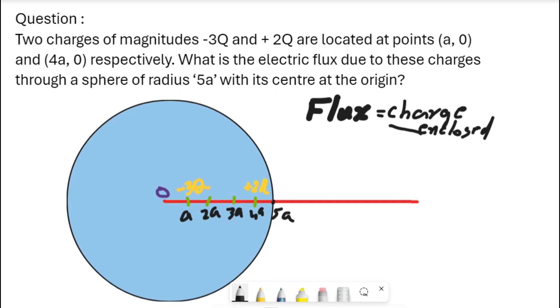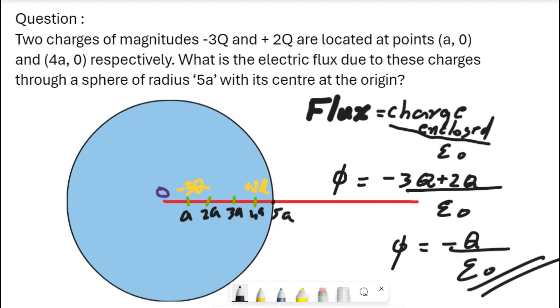Here the enclosed charge, the enclosed area is the circle. There are two charges: -3Q and +2Q. Sum of these two charges will be -Q. So total flux phi is equal to -Q divided by epsilon 0. Thank you.